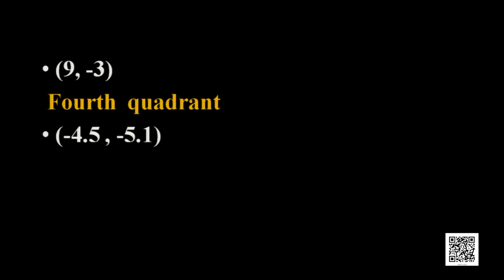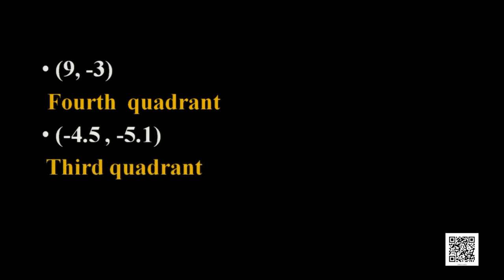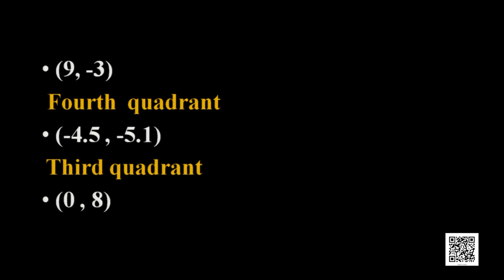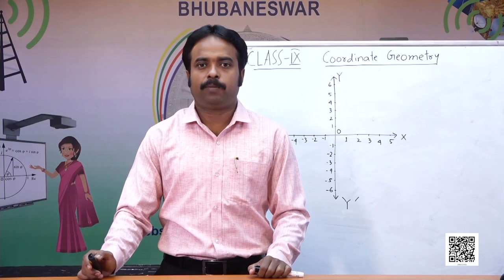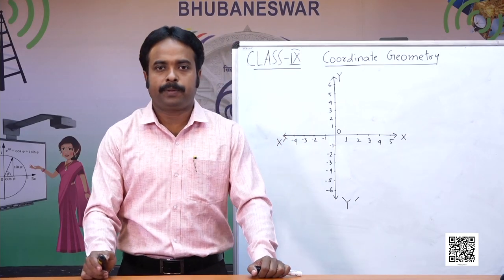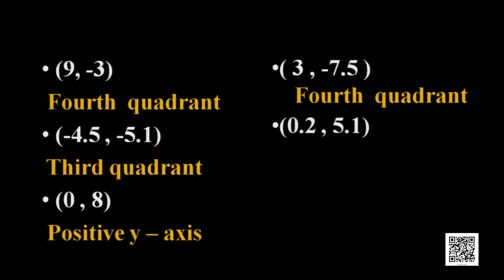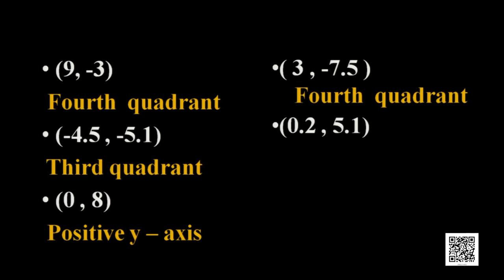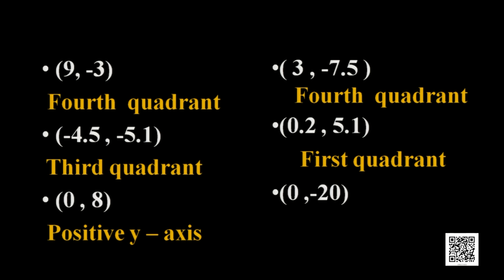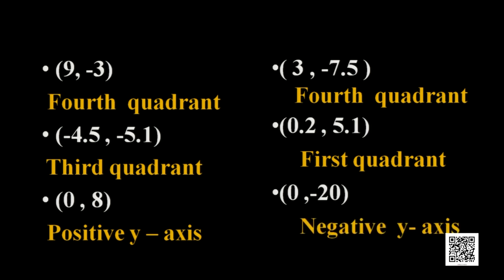Similarly, minus 4.5 comma minus 5.1 is in the third quadrant. The point 0 comma 8 is on the positive y-axis. The point 3 comma minus 7.5 is in the fourth quadrant. The point 0.2 comma 5.1 — both components are positive — therefore this is in the first quadrant. And 0 comma minus 20, as the x-component is 0, this is lying on the negative y-axis.